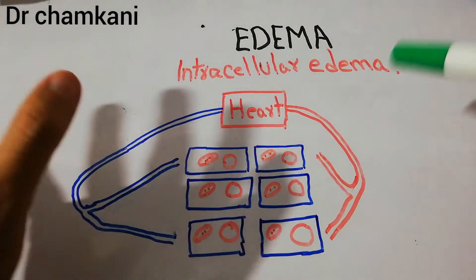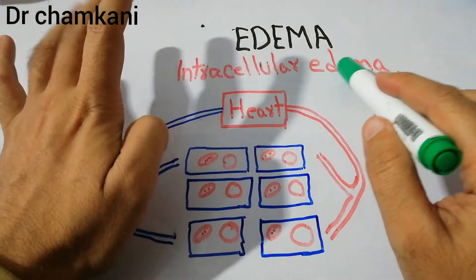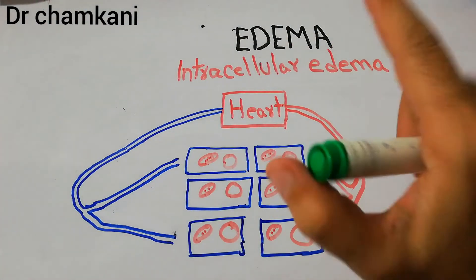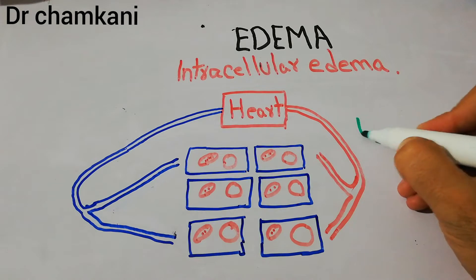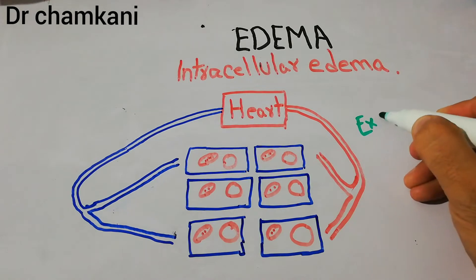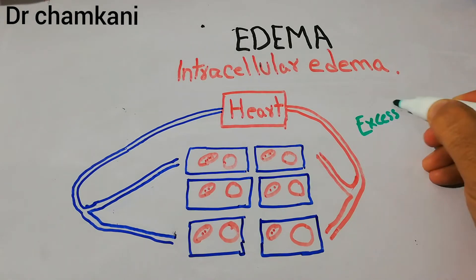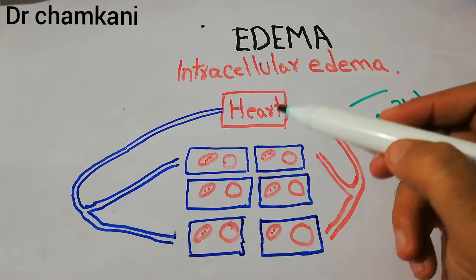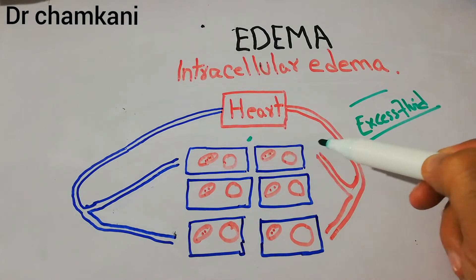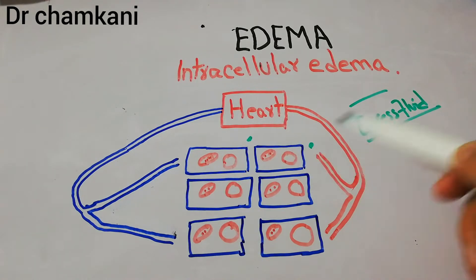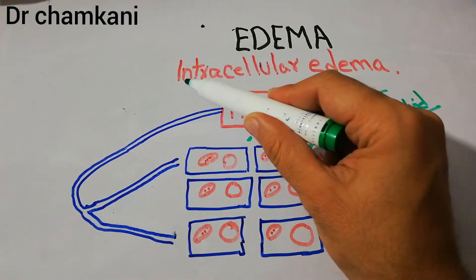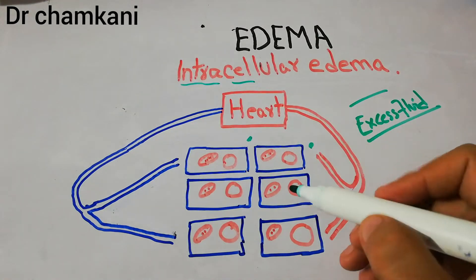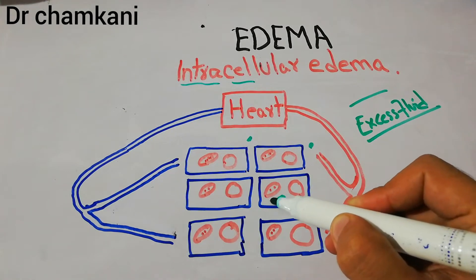In intracellular edema there is accumulation of excess fluid inside the cell. In extracellular edema, by contrast, there is collection of fluid outside the cell in the extracellular spaces. So intracellular edema means excess fluid accumulated inside the cells.